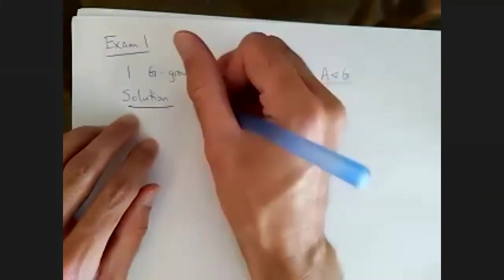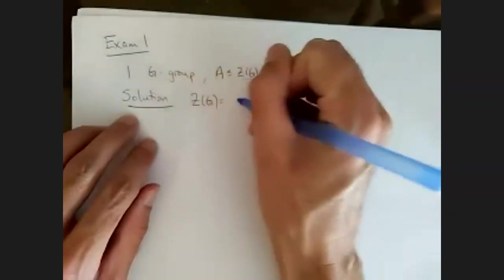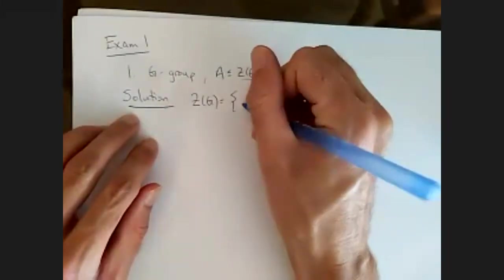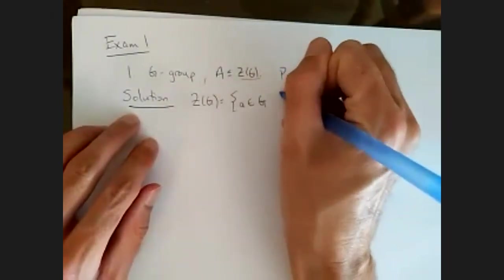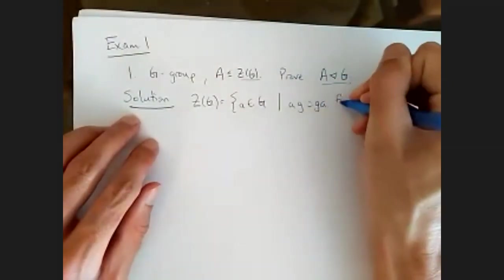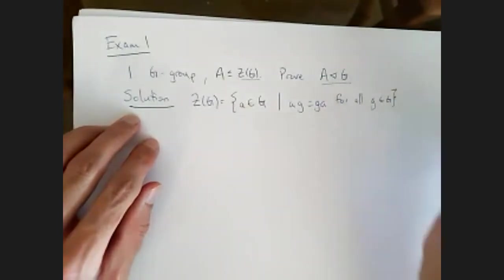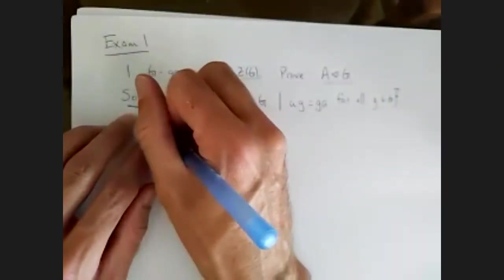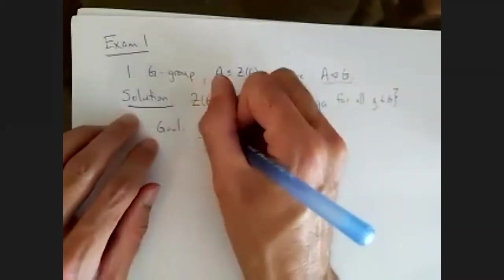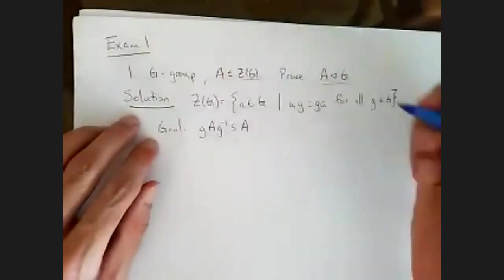Let me remind you: the center of G is the set of all elements a of G such that ag equals ga for all g. And we have to show — our goal is to show that gAg⁻¹ is contained in A, or some variation of that.